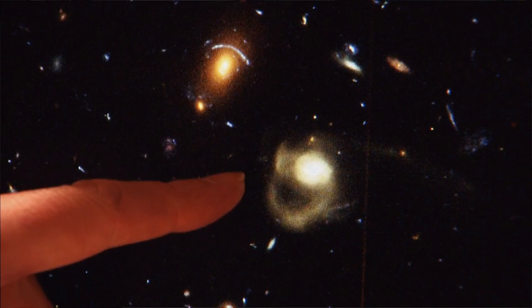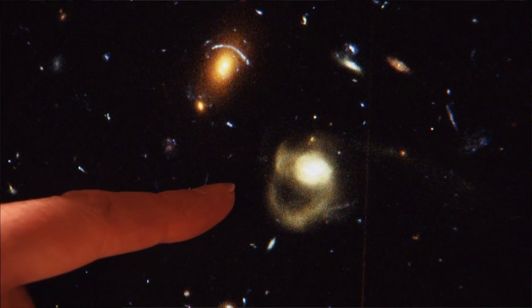So here we have a Hubble image, and it contains a range of objects of different brightnesses and ultimately different distances. But if we just focus on this image here, which is a galaxy in the centre, we can see how we add the spectroscopic information.